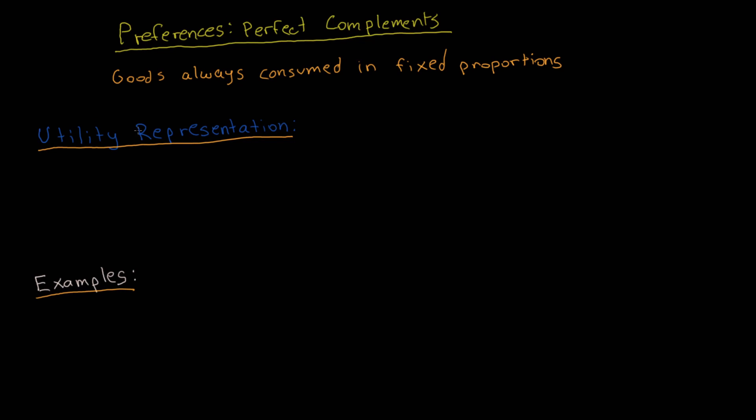In this video, I'm going to be covering a particular type of preference in consumer theory known as perfect complements. Perfect complements are goods that are always consumed in fixed proportions. I'll be going over the utility representation for these preferences, some real-world examples of perfect complements and how they relate to this utility function, and then the indifference curves for these preferences.